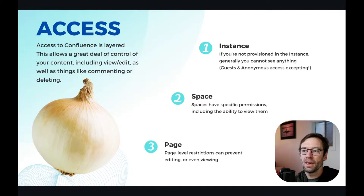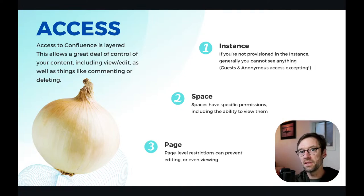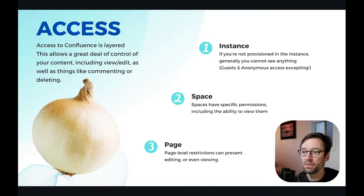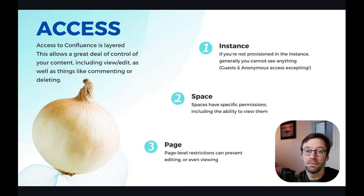The lowest level is the page, and Confluence calls this restrictions. So spaces have access; pages or blogs have restrictions. I might have access to an instance and a space, but I can't see some pages in there — I'm restricted from viewing them, or maybe I'm just restricted from editing them. So anytime I send someone a link, I double-check: does the person I'm sending it to have access to see it? For me, I try to make things as open as I can, but there are some legitimate use cases for locking things down — sensitive documents, compensation, termination plans, etc.